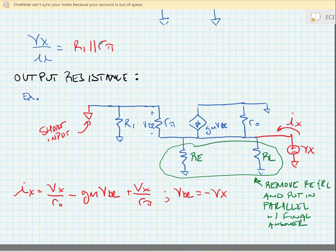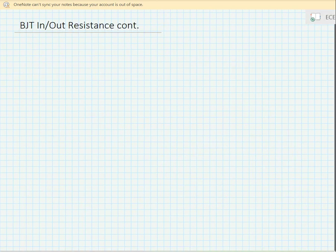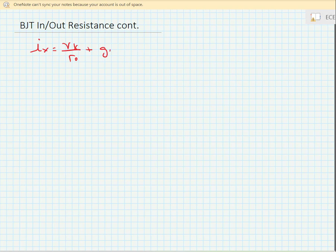We can now make a few substitutions. Ix is equal to Vx over R sub 0 plus Gm times Vx plus Vx over Rpi.